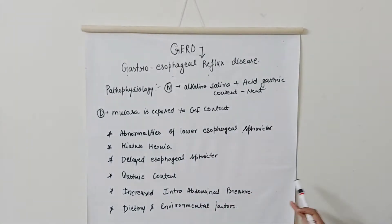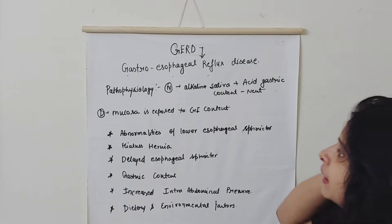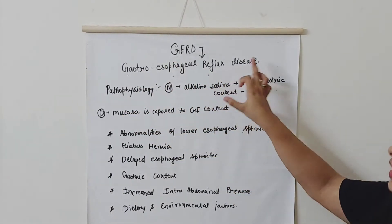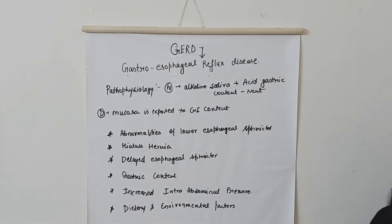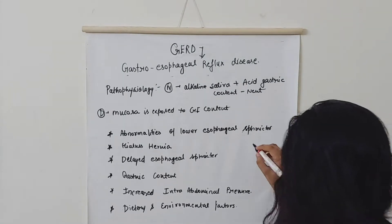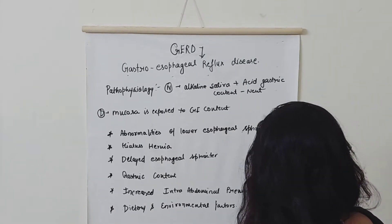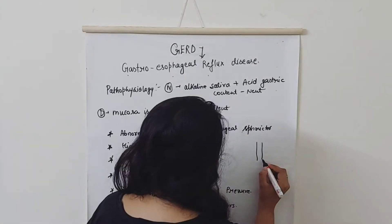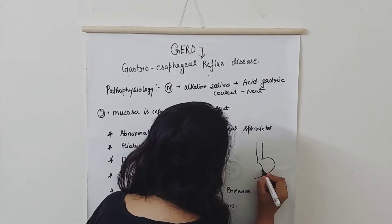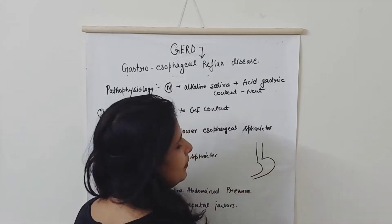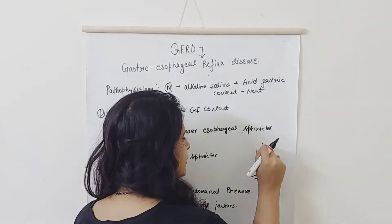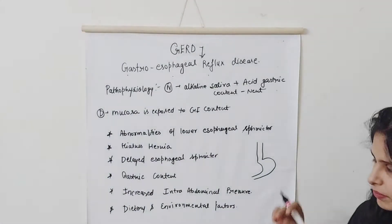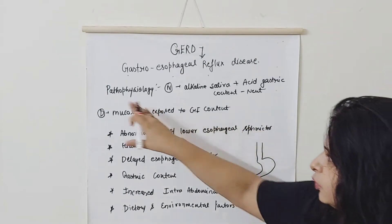First, let's look at gastro-oesophageal reflux disease. If we remember anatomically, this is your oesophagus and here is our stomach. When we study pathophysiology, this is the normal anatomy.